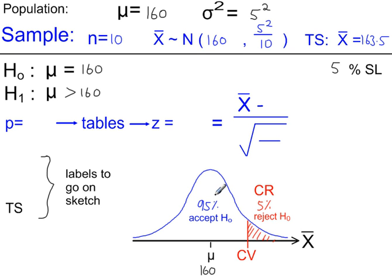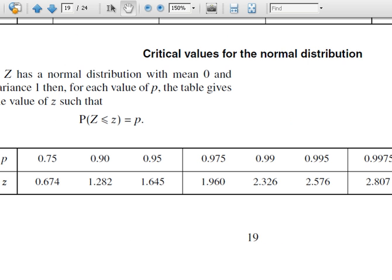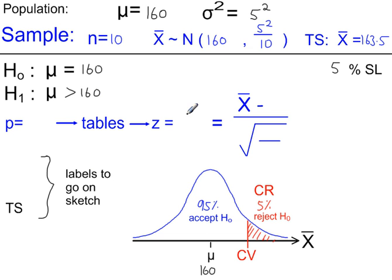So we look up 95% from the normal tables. Page 19, 95%. The z value is 1.645. And it's positive, because we're on the right-hand side of the distribution. If we were on this side, that would be a negative value. You would put a minus in front of the 1.645.